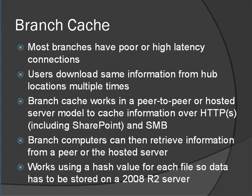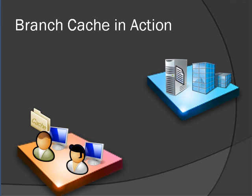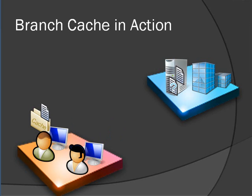Branch Cache is a new feature in R2. The big deal with Branch Cache is it enables us to save our network bandwidth by having clients or a dedicated server cache files that are downloaded over a WAN link. Essentially a Branch Cache user downloads a file and it gets cached locally automatically. Then another user who wants to access the same file accesses the Branch Cache.